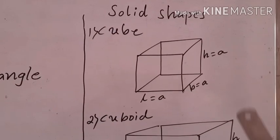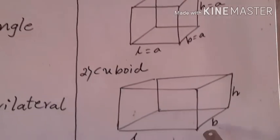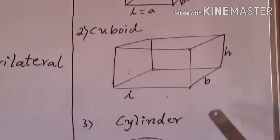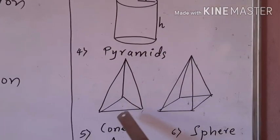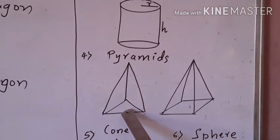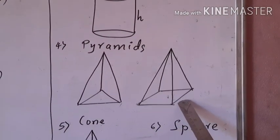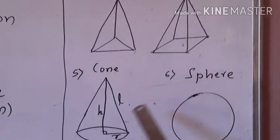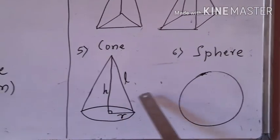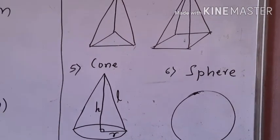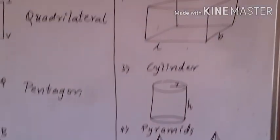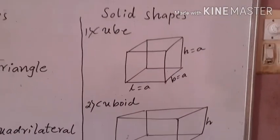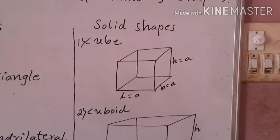Whereas the solid shapes like cube, cuboid, cylinder, triangle-based pyramid, square-based pyramid, cone, and sphere — these have area as well as volume.